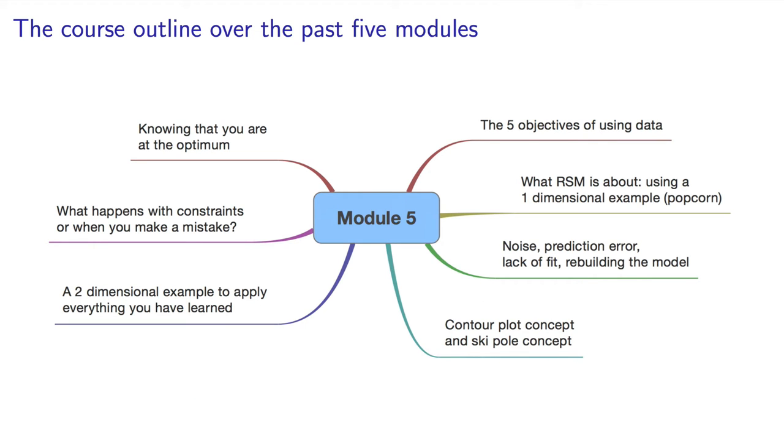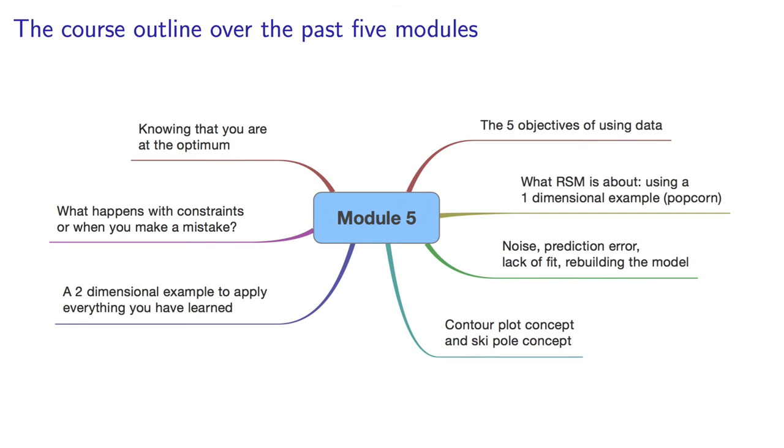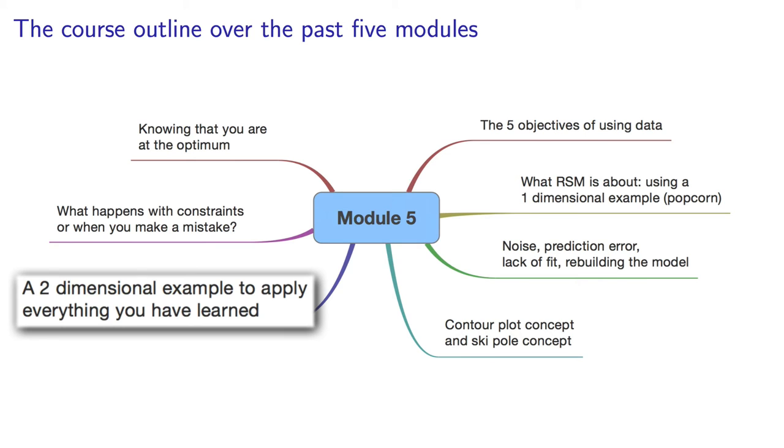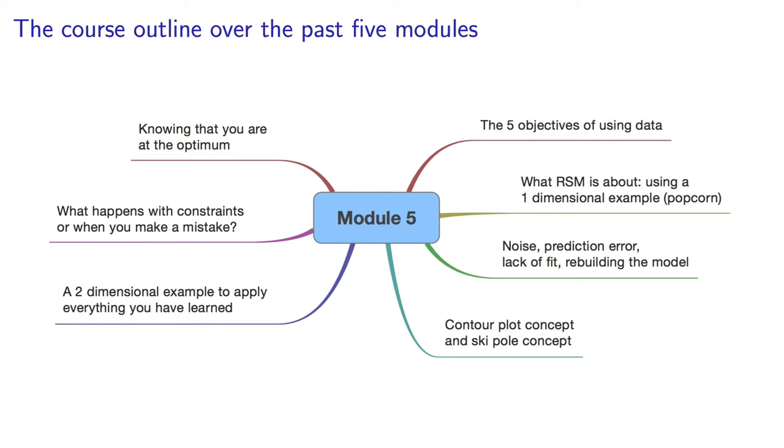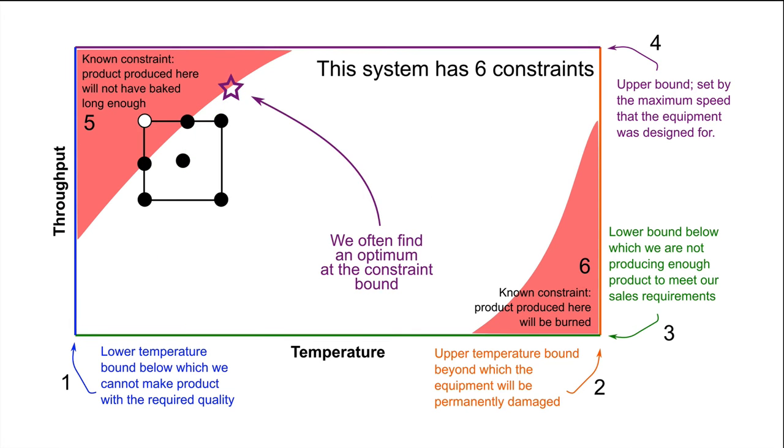Then we started the fifth module of this course: experiments to move outside the region where we started and seek out an optimum. We initially looked at the single factor case, mainly because we can easily visualize that and illustrate the important concepts of noise, model prediction error, lack of fit, and building and rebuilding the model as we go. We applied those concepts to the idea of optimizing in two dimensions, and we saw a sequence of videos on the details on how to go about that in the fifth module. Even though those videos were long, they covered some digressions on the practical aspects of dealing with constraints and making mistakes.